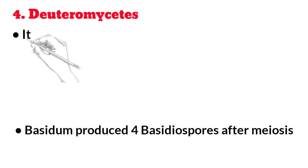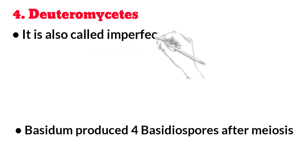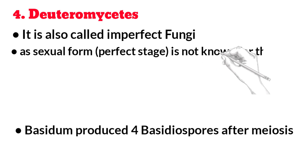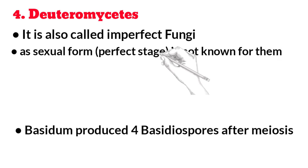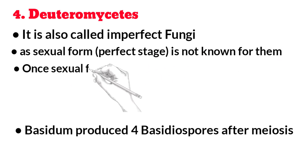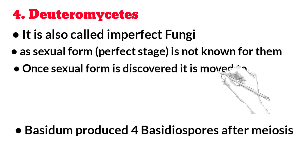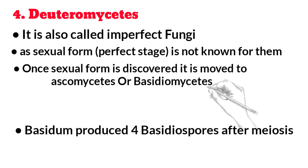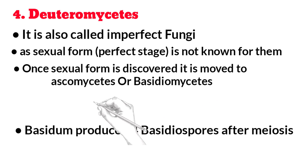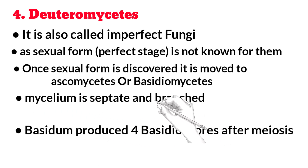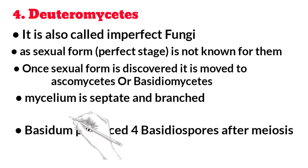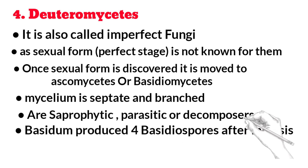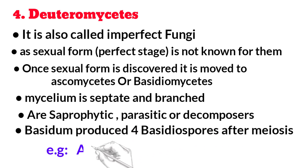Deuteromycetes, also called imperfect fungi, because their sexual form (perfect stage) is not known. Once the sexual form is discovered, they are moved to Ascomycetes or Basidiomycetes. Mycelium is septate and branched; they are saprophytic, parasitic, or decomposers.